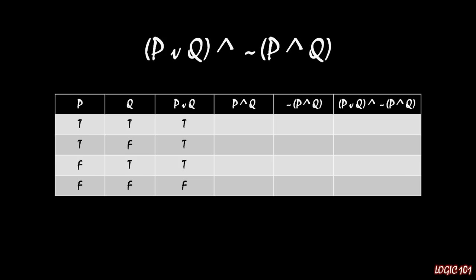For column four we have a conjunction. Remember that a conjunction is TRUE only when both component parts are TRUE, and FALSE when at least one of them is FALSE. So we have a truth value of TRUE in the top row and FALSE in each of the bottom three rows.